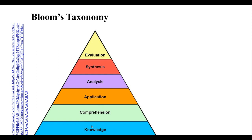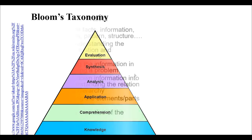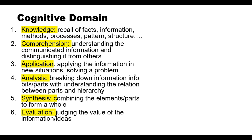Knowledge comes first. Without knowledge, a person cannot comprehend or understand. After gaining knowledge and understanding, one can move towards application and then higher levels of thinking. Knowledge relates to the recall of facts, gaining information, knowing about methods or processes, patterns, and structures. These kinds of factual information represent the knowledge level.